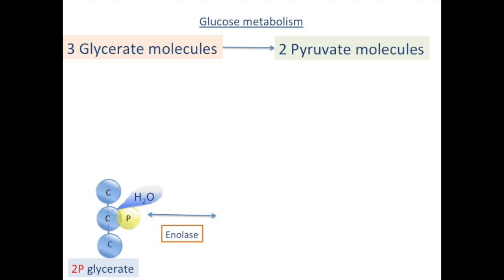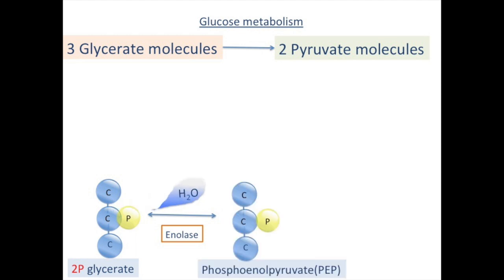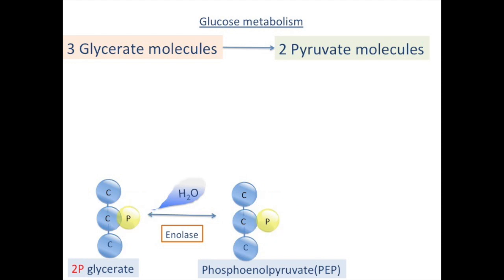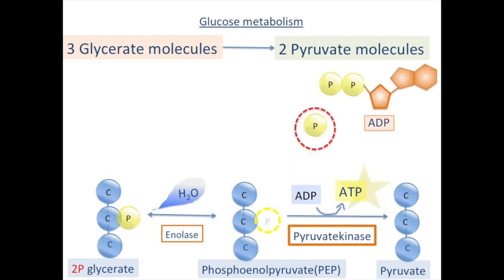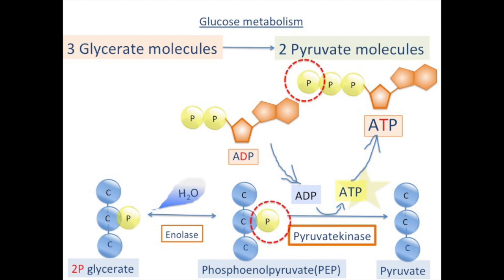Enolase loses water and it's converted to phosphoenolpyruvate. There's no phosphorylation reaction and it's converted to pyruvate. Phosphoenolpyruvate loses a phosphate group, ATP gets it, and ATP is produced. In the end, I'm done with the phosphorylation reactions. We'll see you next time.